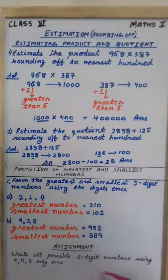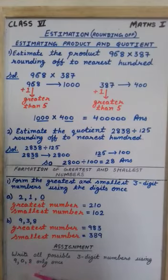Now this is an assignment for you. You will write all possible 3 digit numbers using 9, 0 and 8 only once. See you guys!